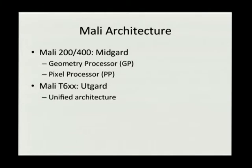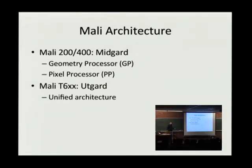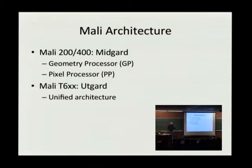The original Mali 200 and 400 is not a unified architecture, so we have two instruction sets to reverse engineer and write a compiler for that are completely separate: what Arm calls the geometry processor, which runs vertex shaders, and what they call the pixel processor, which runs fragment shaders. The upcoming new stuff is the T6XX, and I've started to reverse engineer that so it's partially figured out, but we haven't even gotten anywhere on writing the compiler — it's more exploratory at this point. But that's a unified architecture, only one thing to reverse engineer, and it's a lot nicer, so hopefully a lot less work this time around.